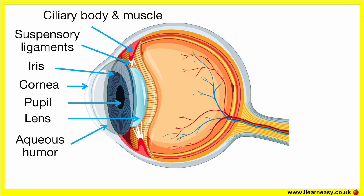Suspensory ligaments, also known as zonular fibers or zonules. These hold the lens in place and assist with lens adjustment. They transmit force from the ciliary muscles to the lens. When the ciliary muscles contract, the ligaments relax so the lens gets thicker. When the ciliary muscles relax, the ligaments tighten and the lens gets thinner.